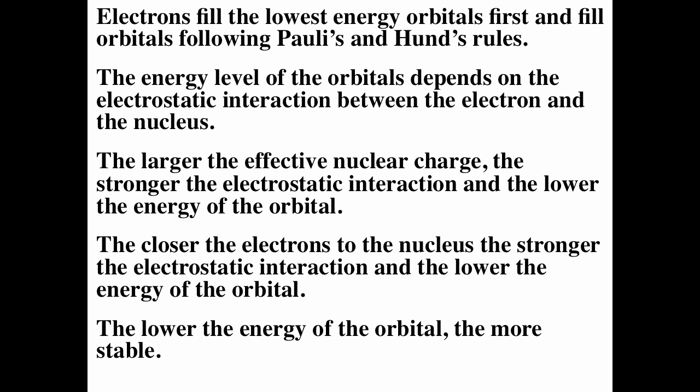Electrons fill the lowest energy orbitals first, following Pauli's Exclusion Principle and Hund's Rule. An orbital is characterized by a unique set of three quantum numbers n, l, and m sub l. An electron is characterized by a unique set of four quantum numbers n, l, m sub l, and m sub s. m sub s can have values of plus a half or minus a half. Because m sub s has two possible values, that's why you can have a maximum of two electrons per orbital.